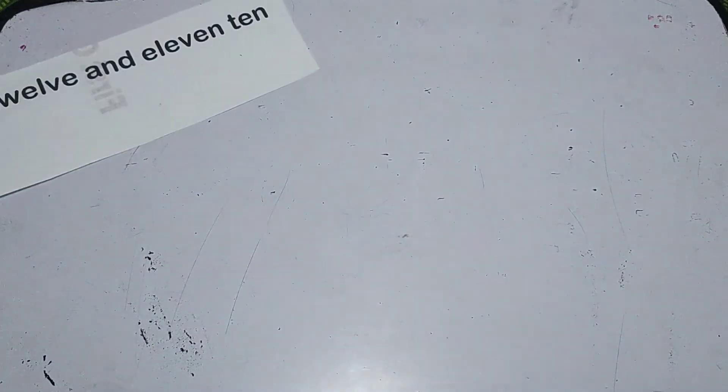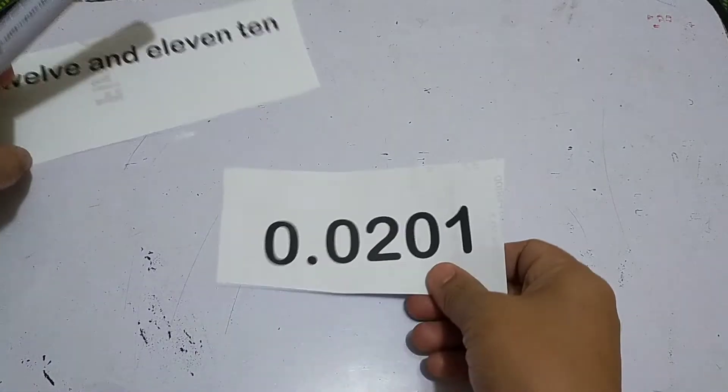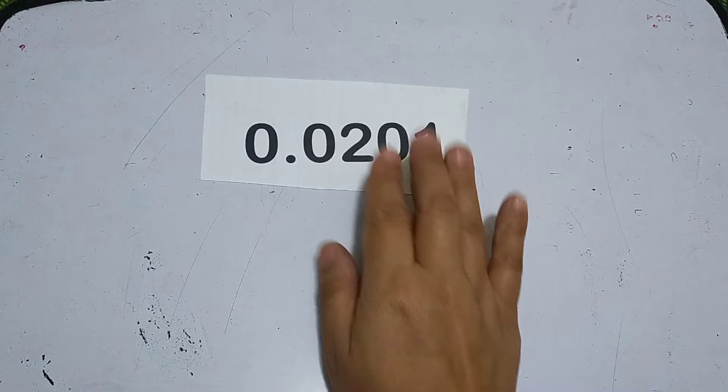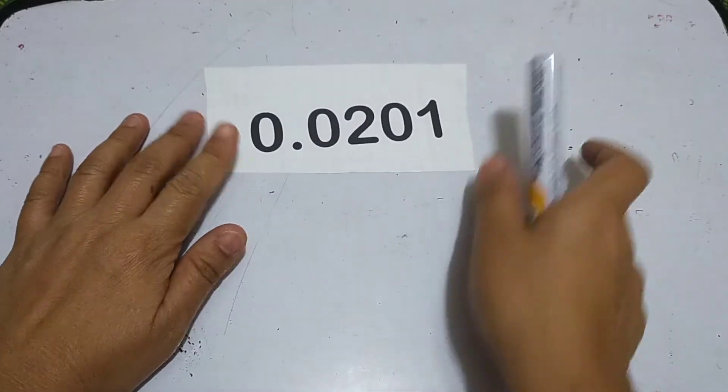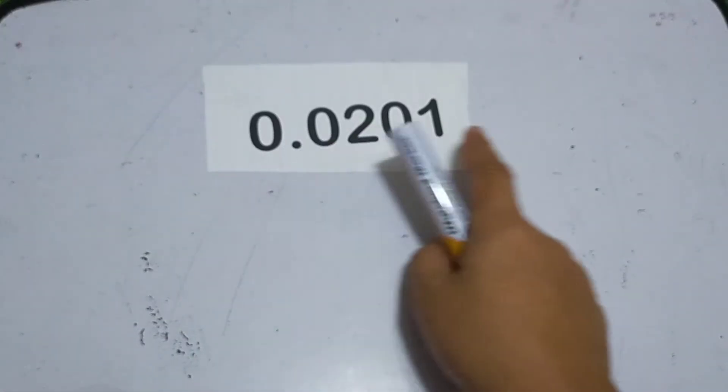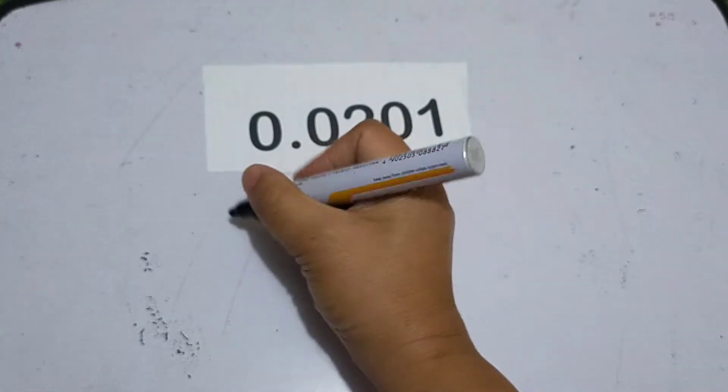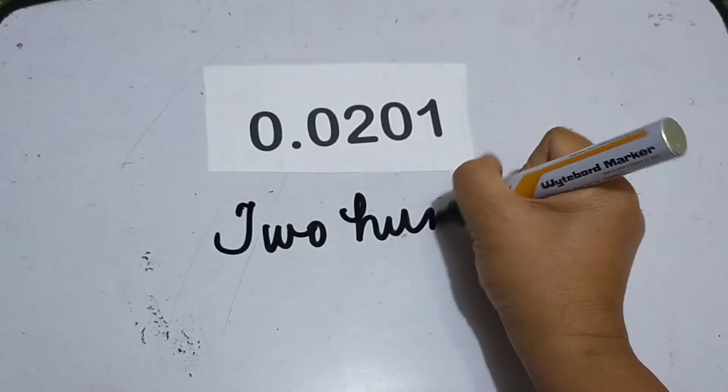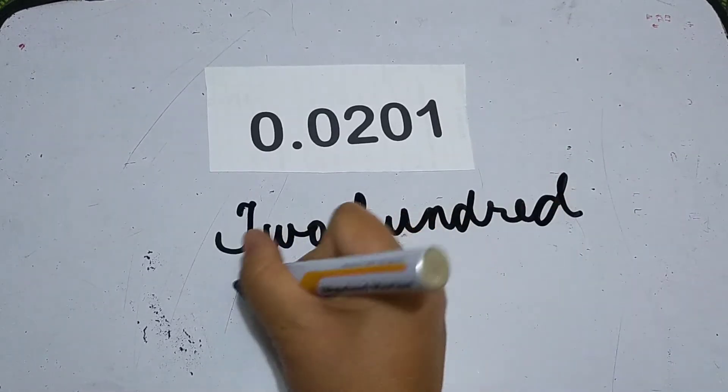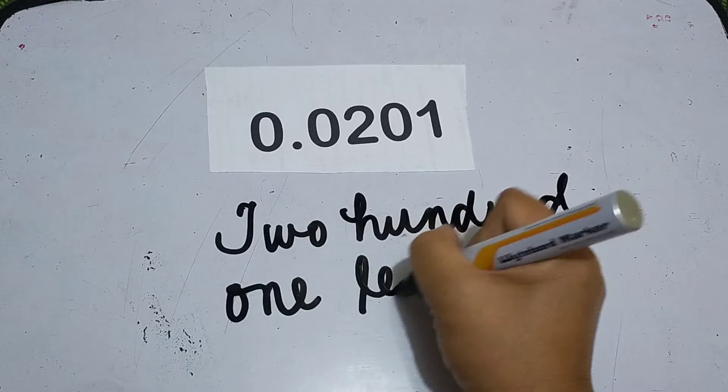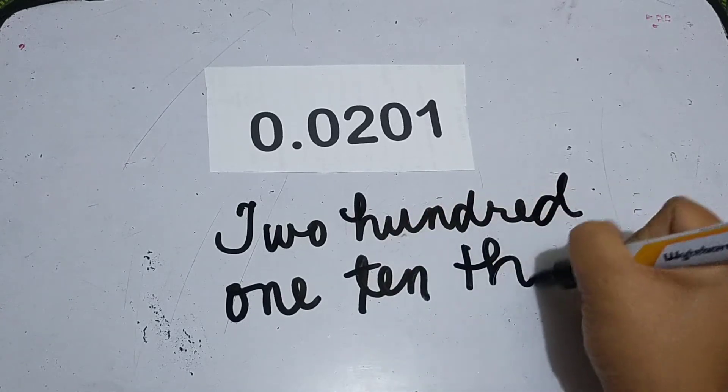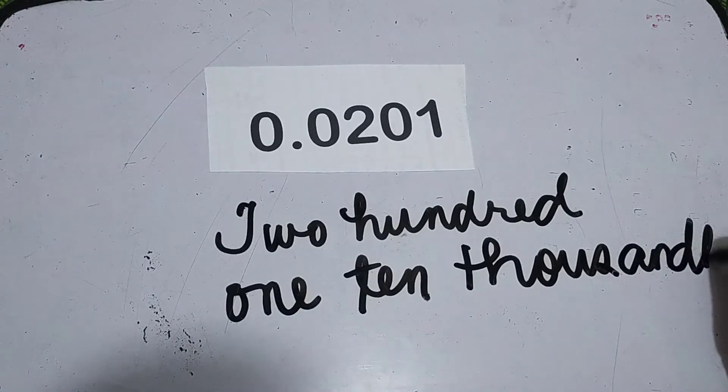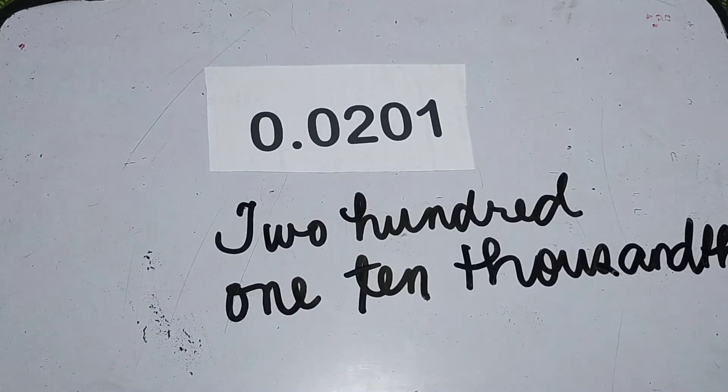So now, let's write this one in words. How are we going to read this? It's easy. This is read as 201 ten thousandths.